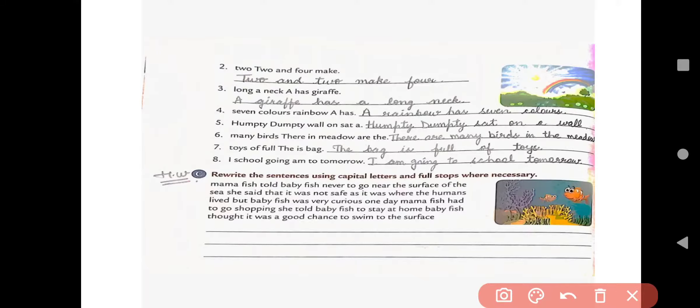Good. Fourth one, Seven colors rainbow a has. So, how we will make it? A rainbow has seven colors. And the fifth, Humpty Dumpty wall on sat in. No, it's very easy. You know very well. Humpty Dumpty sat on a wall. Okay, in the sixth one, Many birds there in meadow at the. So, here sentence will be, There are many birds in the meadow.